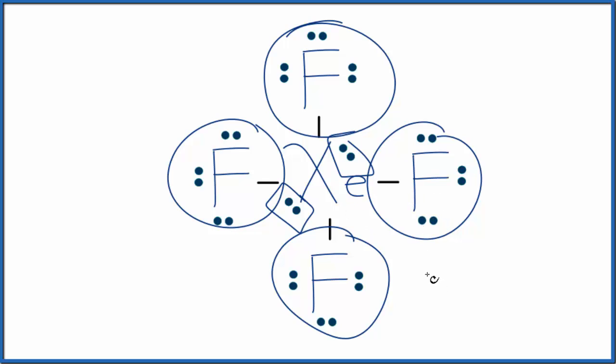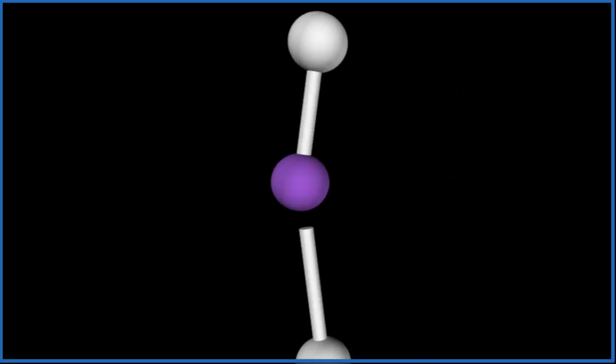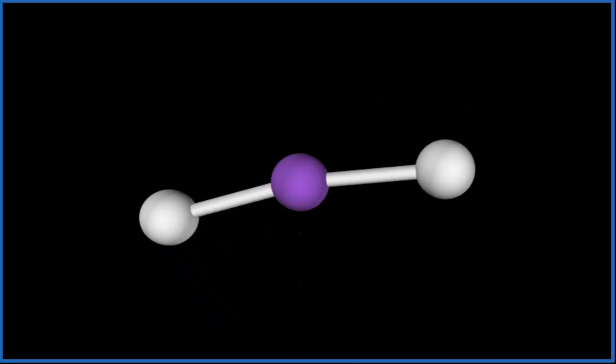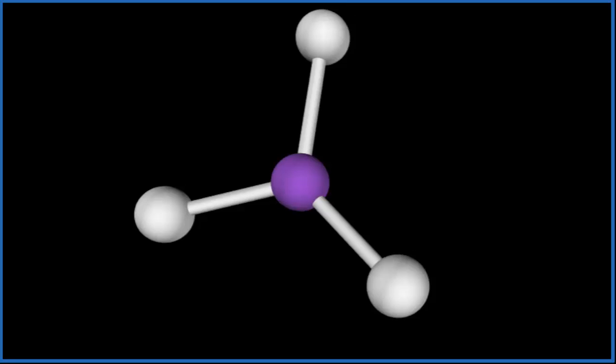It helps to visualize this. The purple, that's the central xenon atom. Let's add four fluorine atoms: one, two—you see they spread out as far away as they can from each other—three, four.